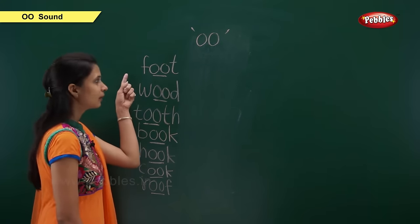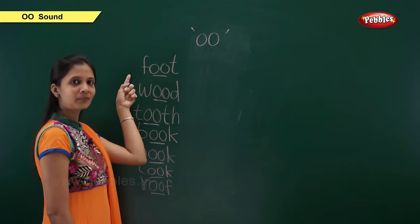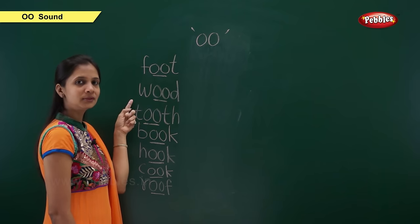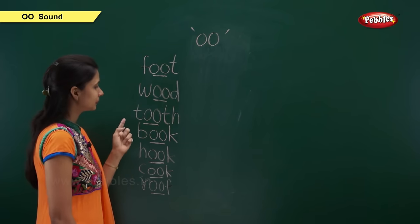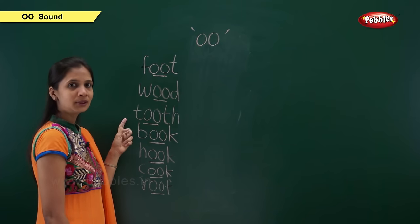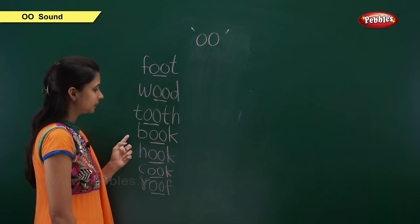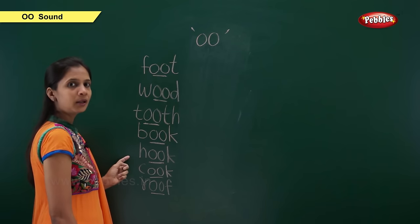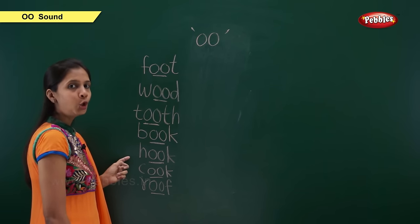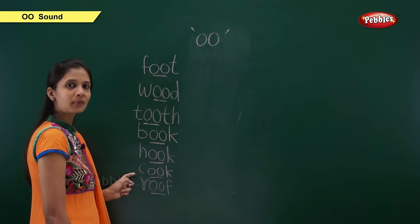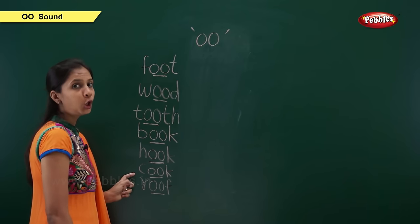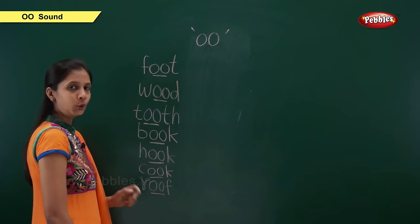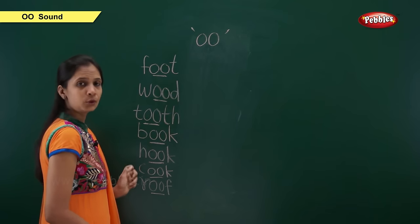Now we will repeat. Foot. Wood. Tooth. Book. Hook. Cook. Roof. These are all our short OO sound words.